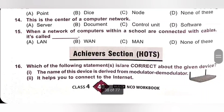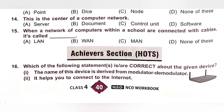Fourteenth. This is the center of a computer network. A. Server, B. Document, C. Control Unit, D. Software. In computer networking, a server is a computer designed to process requests and deliver data to other computers over a local network or the internet. Option A, Server, is the correct answer. Server is the center of a computer network.